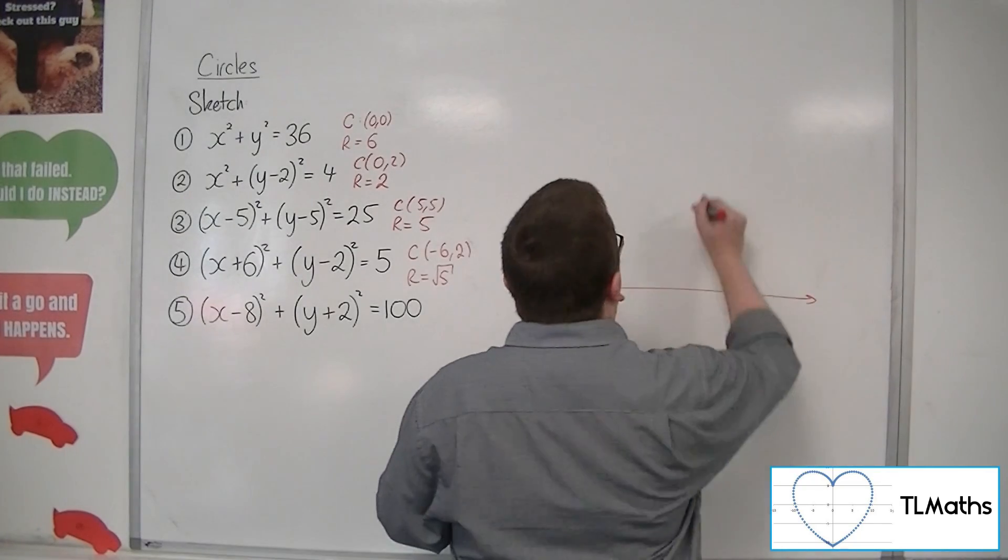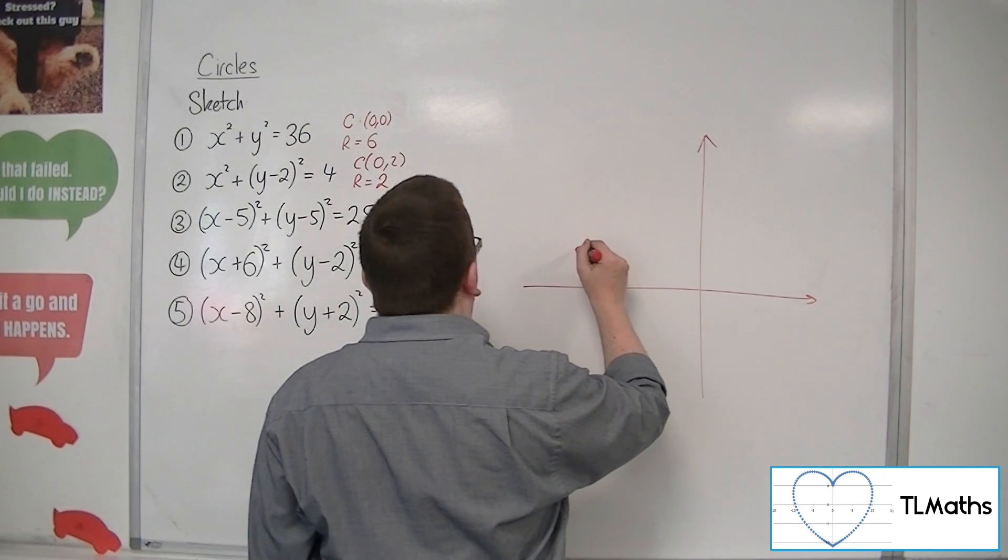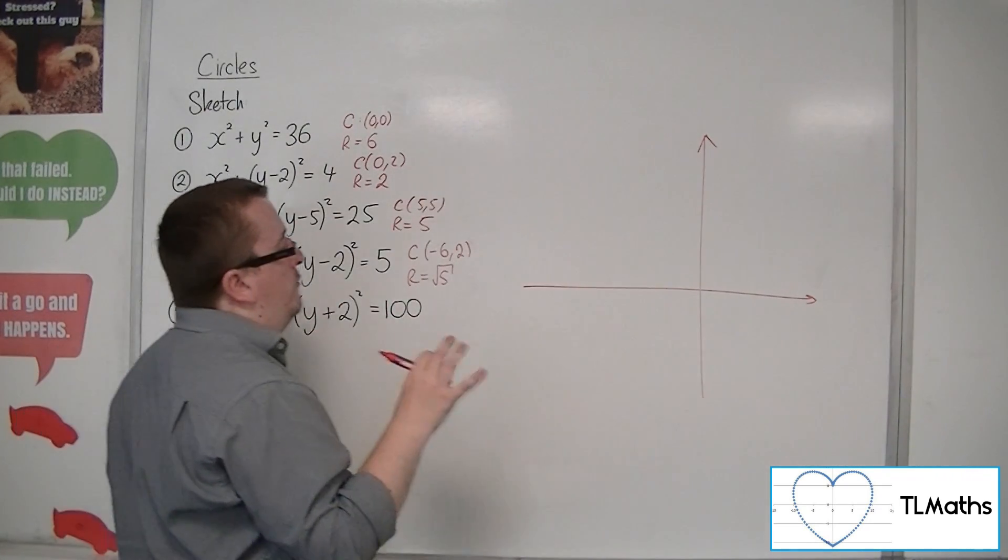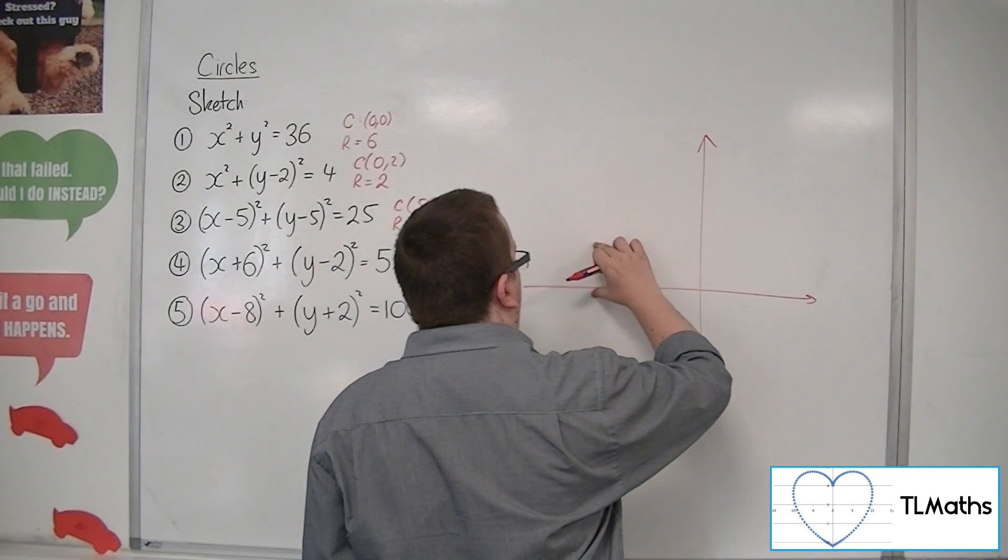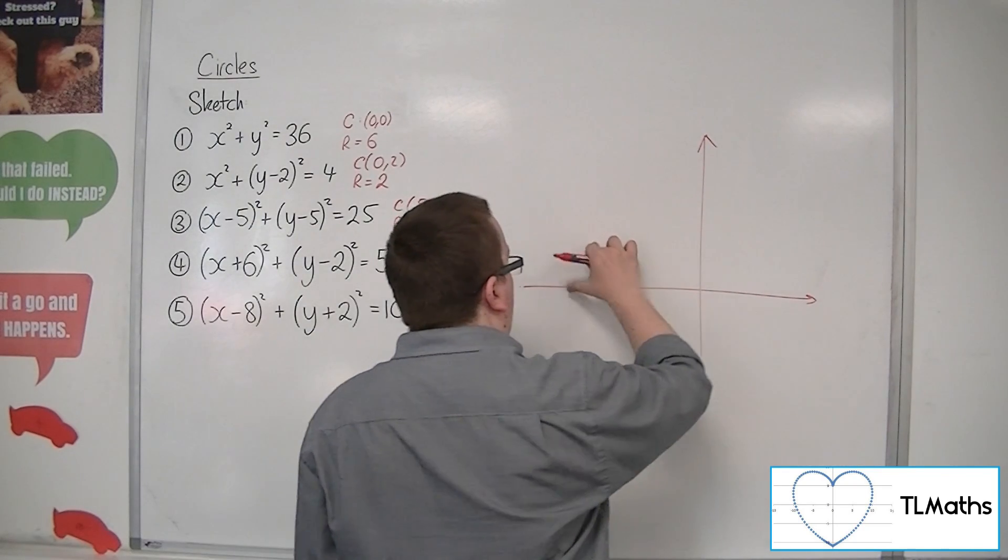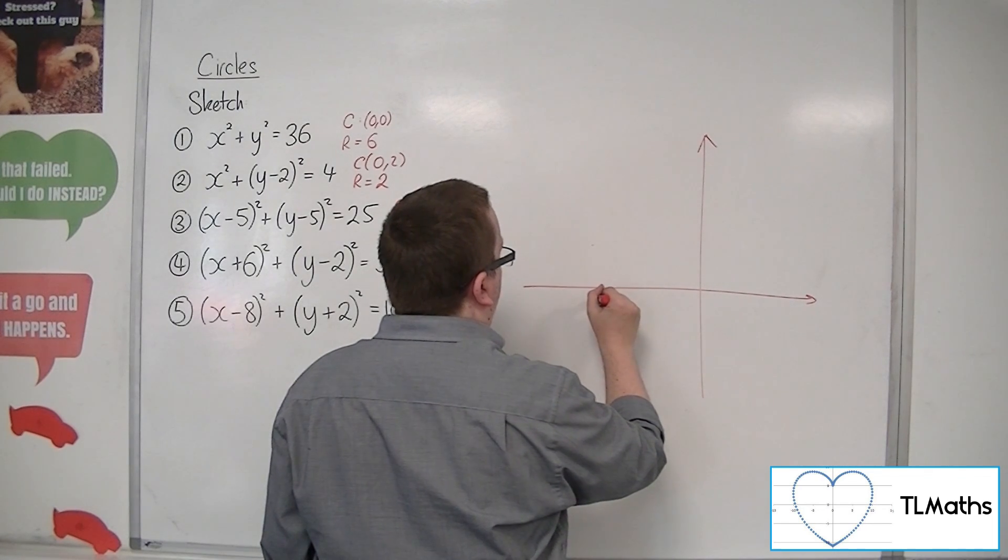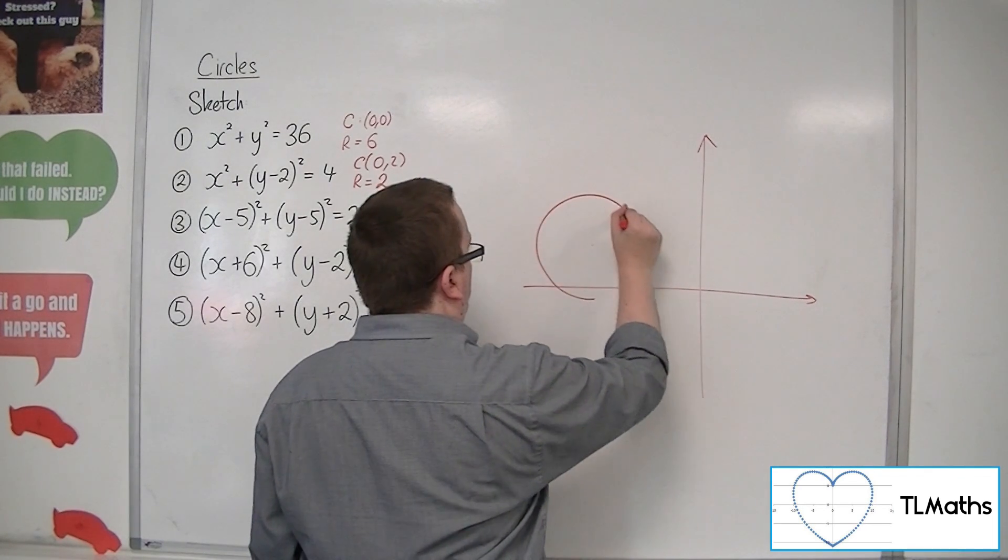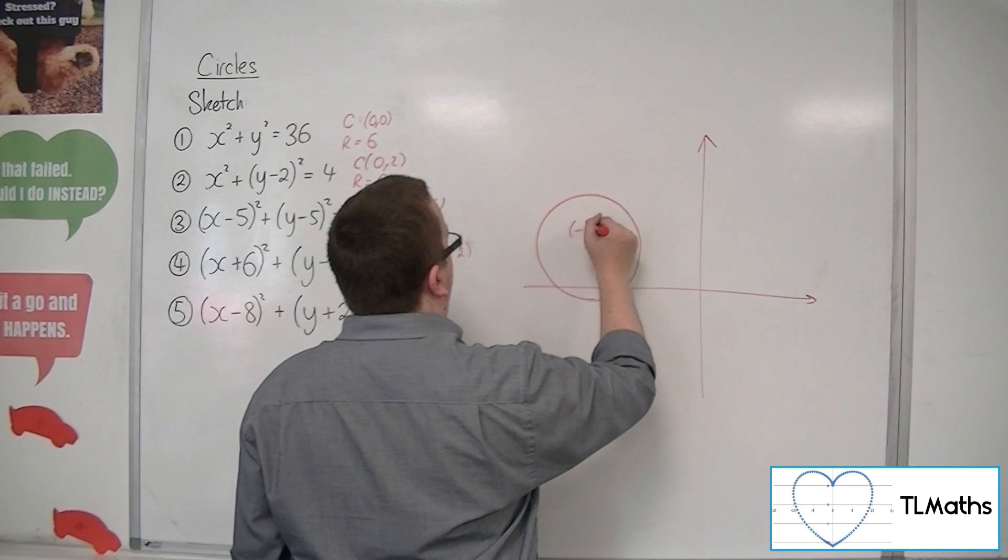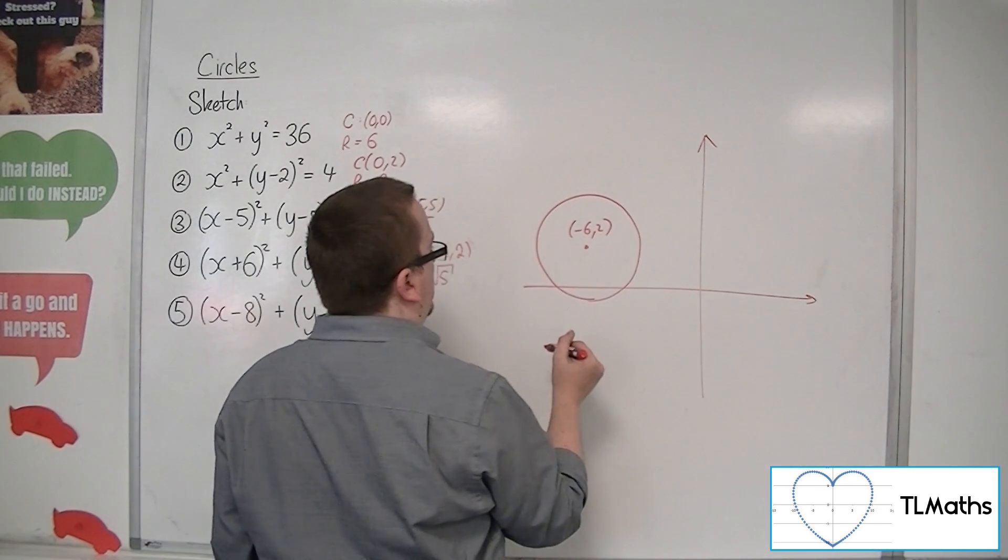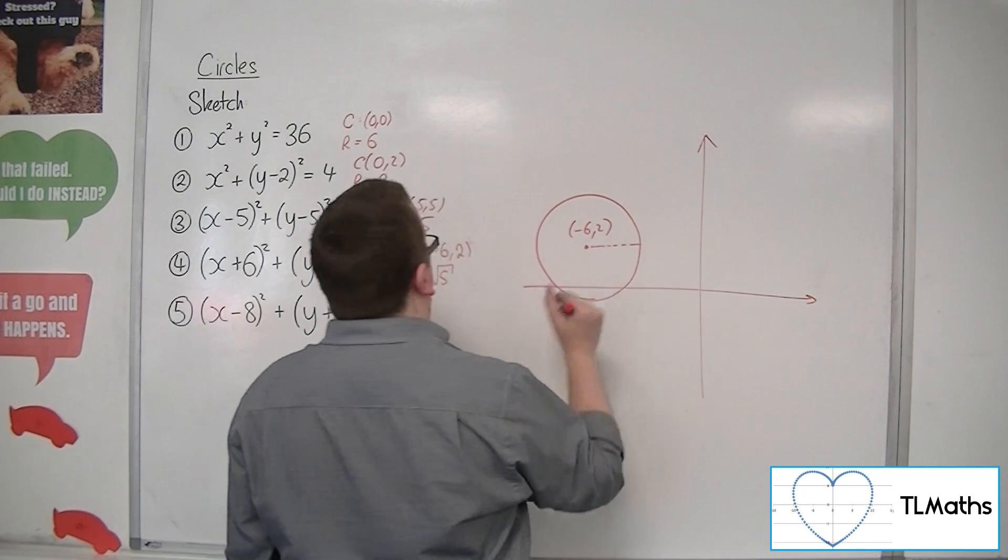So minus 6, 2. So minus 6, 2 is going to be somewhere out here for its centre. Now, because it's got a radius of root 5, which is a little bit more than 2, that must mean that the bottom of the circle must be just under that x-axis. So it'll be something like, something like that. So here's my centre at minus 6, 2. So it has this radius of root 5.